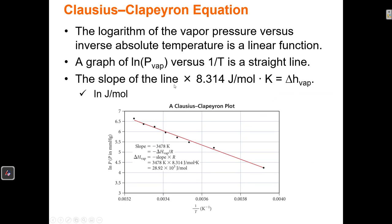We can determine the heat of vaporization by measuring the temperature of a substance as a function of its vapor pressure. In an experiment, we measure the vapor pressure as it varies with temperature — we change the temperature and see how the vapor pressure changes, and plot these points on a graph. To use the Clausius-Clapeyron equation to compute the enthalpy of vaporization, delta H of vaporization, we can't just plot pressure as a function of temperature.